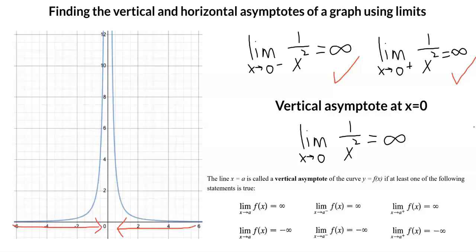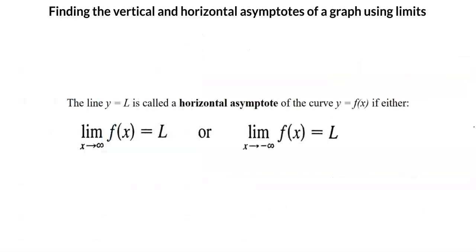Is there a similar method or definition for horizontal asymptotes? Great question. Yes, there is. Let's go through that now. The line y equals L is called a horizontal asymptote of the curve y equals f(x) if either the limit of f(x) as x approaches positive or negative infinity equals a number L. Notice that we are now determining limits at infinity or when x becomes arbitrarily large.